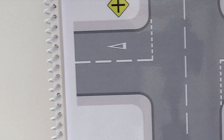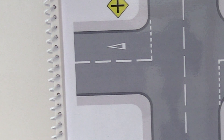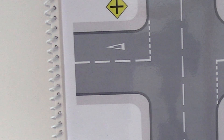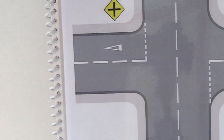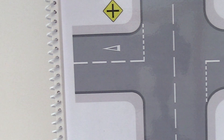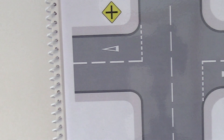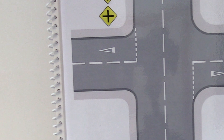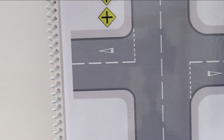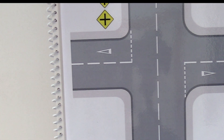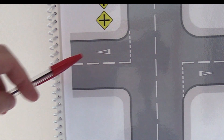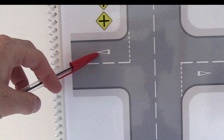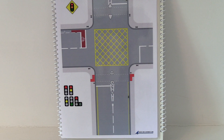Another road marking you'll see is the white triangle. This means you have to give way to any traffic on the major road ahead, or if it's a roundabout, give way to any traffic on the right or already turning. The white triangle basically means yield.